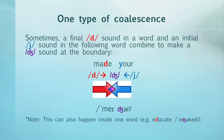Please note, this type of coalescence can also happen inside just one word, like when the d and the u combine to make a j sound in educate. However, since our focus is on connected speech, we're only looking at where this happens when the end of one word meets the beginning of the following word.